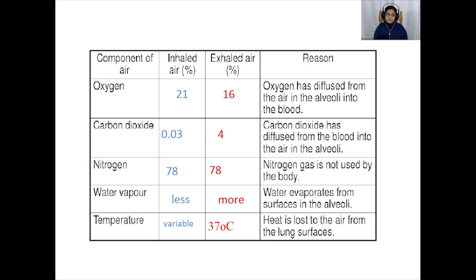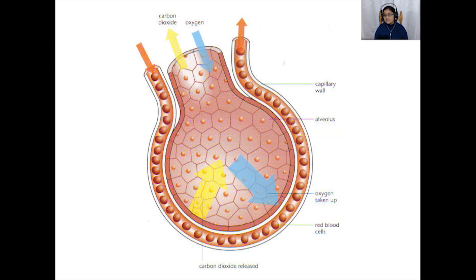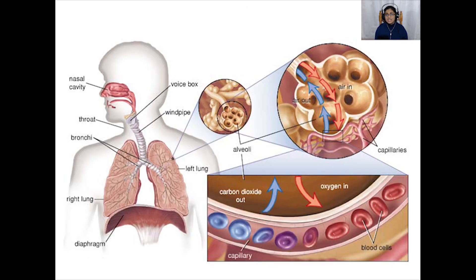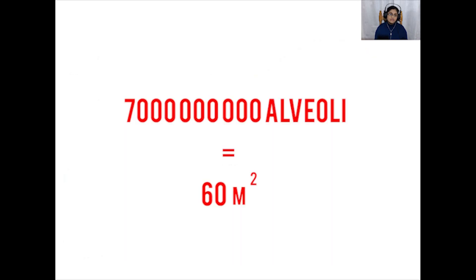Now let's look at gas exchange in the alveoli. You can tell what is happening during gas exchange by comparing the amounts of different gases in atmospheric air versus exhaled air. Exhaled air is also warmer than atmospheric air and is saturated with water vapor. The lungs absorb oxygen into the blood and remove carbon dioxide, and this happens in the alveoli. To do this effectively, the alveoli must bring air and blood very close together over a very large surface area. The two lungs contain about 700 million tiny air sacs, giving a total area of roughly 60 square meters — bigger than the floor area of an average classroom.